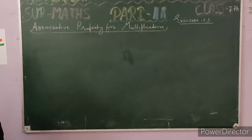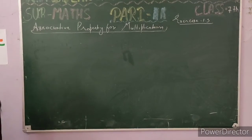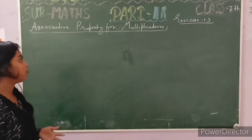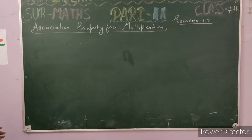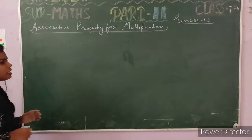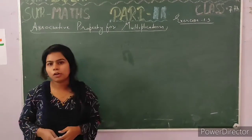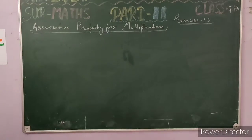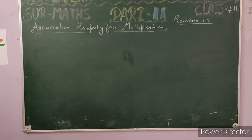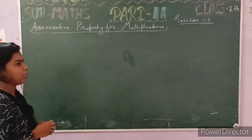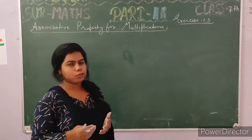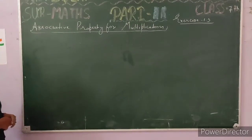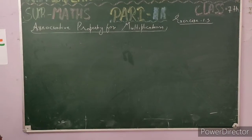What is the meaning of associative property? We already studied about the commutative property. I told you the commutative property: for multiplication, a into b equals b into a. We studied that in previous classes. In today's class I will tell you the associative property.